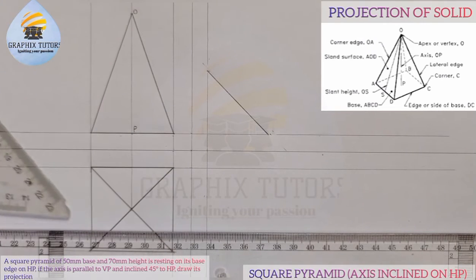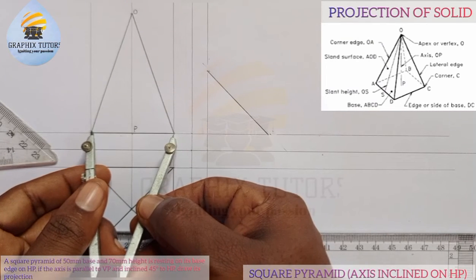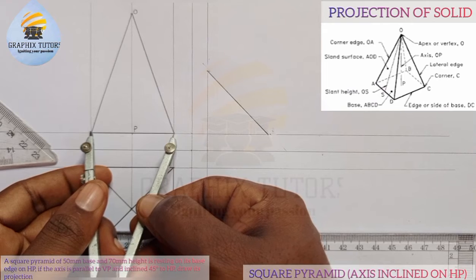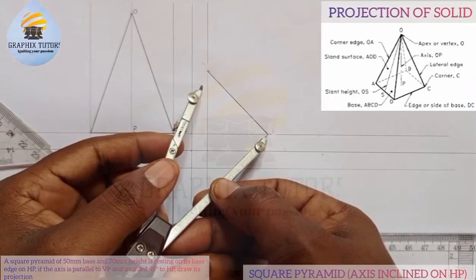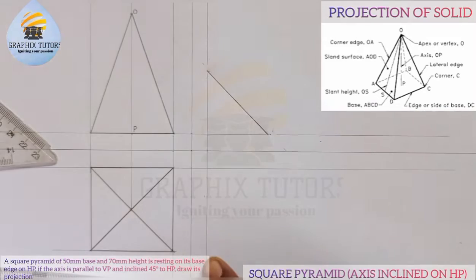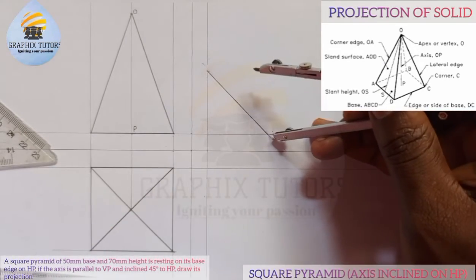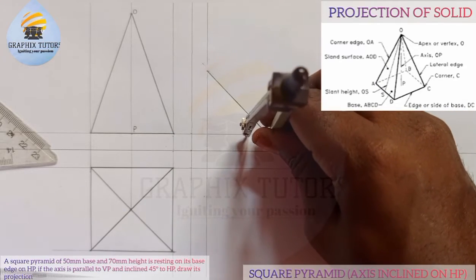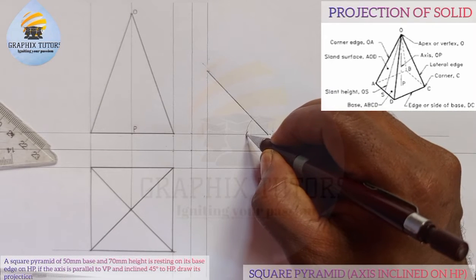So from here to here equals from here to here — you must ensure that. It's not necessarily required to touch this line; if it touches, fine — if not, no problem. You need to ensure that the angle between this point and this point is 45 degrees — that is what you should know.